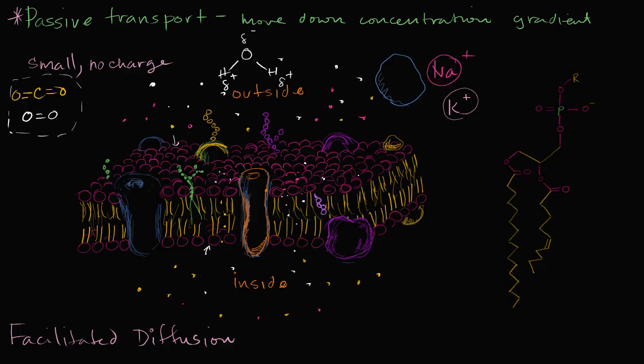And so one form of facilitated diffusion can happen through what we call channel proteins. Channel proteins. And an example of a channel protein might be this one right over here. And maybe this one is specialized for being a channel for water, and so we would call this, this particular one, we could call an aquaporin. Aquaporin, which is just a channel protein for water.